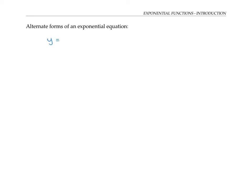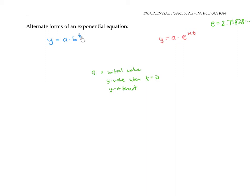The form y equals a times b to the t is only one of two standard ways of writing an exponential function. The other standard way is y equals a times e to the k t, where e is the famous number 2.71828 and so on. Any function written in one form can also be written in the other. No matter which form you use, a still represents the initial value — the y value when t equals zero — because in either form, plugging in t equals zero gives e to the zero equals one, so you just get y equals a.